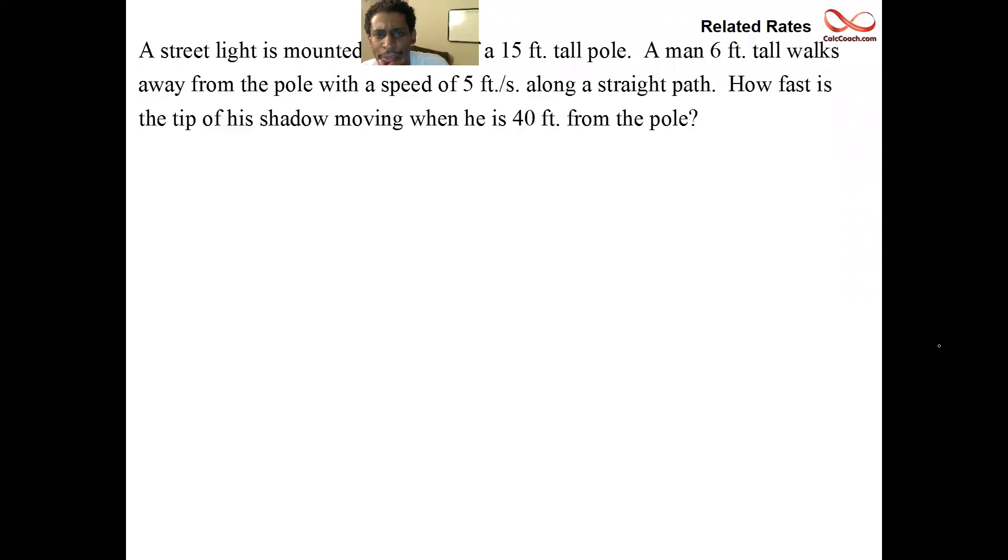Okay, we have a related rates question where we have a street light mounted on a 15-foot pole. Stop right there. Let's get an idea of what that looks like. So there's my 15-foot pole and I have a street light. The person is six feet tall and they're walking away from the pole. The speed at which they're walking away from the pole is five feet every second.